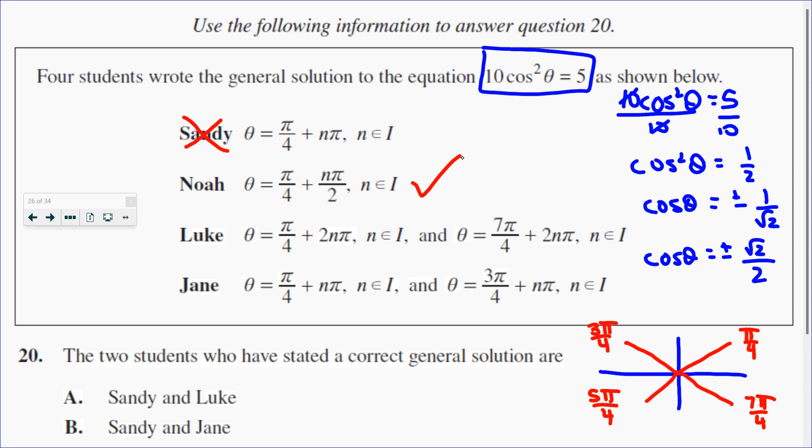So basically what it's doing is taking pi over 4 and adding pi over 2, which is 90 degrees, to get to this one, and then to this one, and then to this one.